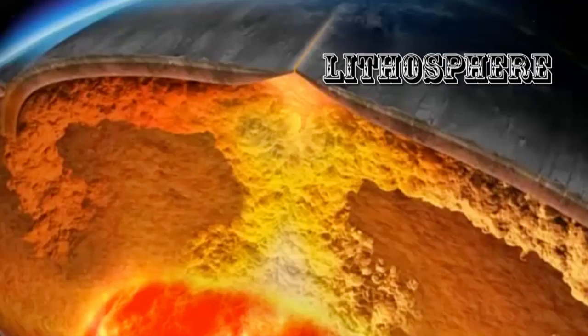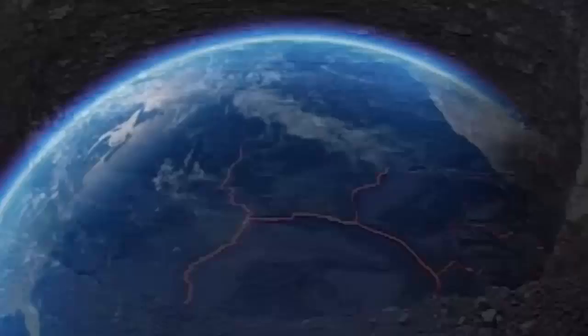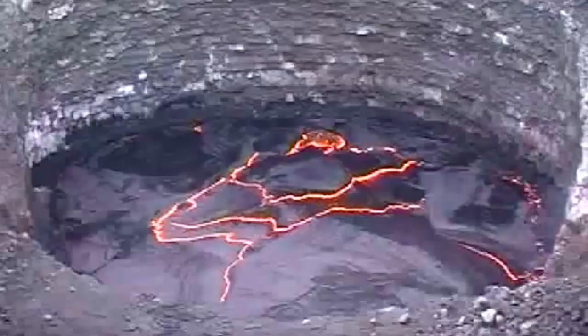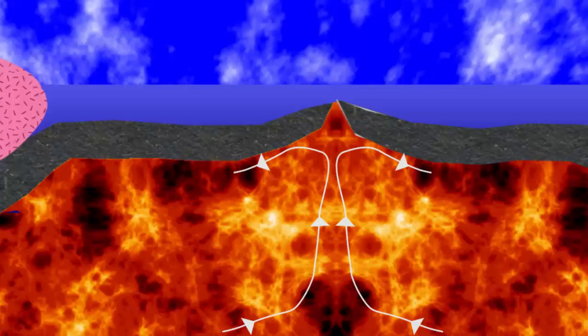Like a pot of water on a stove being heated from below, the asthenosphere rolls over, transferring the heat toward the surface through convection. Where these convection currents in the asthenosphere rise up to the base of the lithosphere, which we recall as the crust and uppermost rigid mantle, the current spreads apart to complete the upper part of the convection cell.